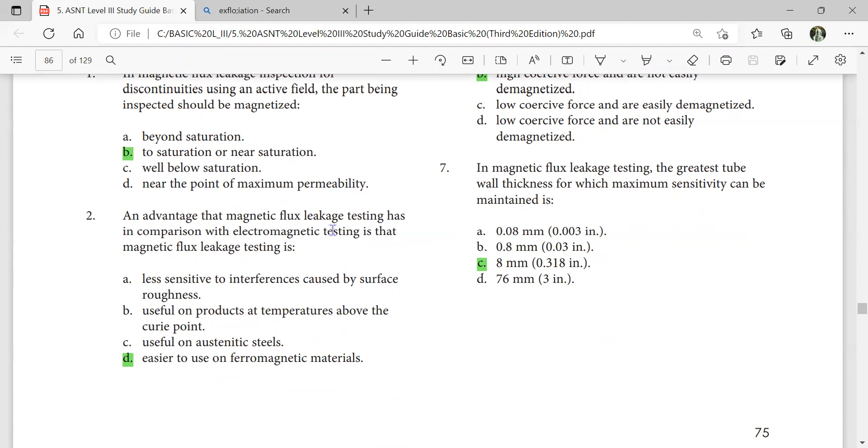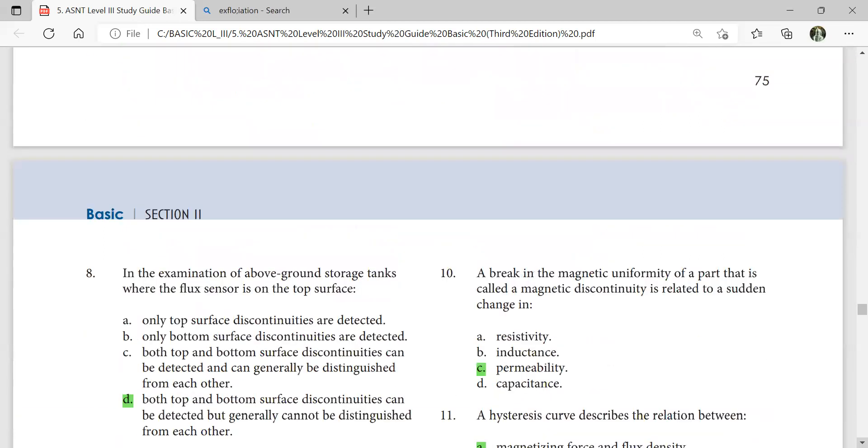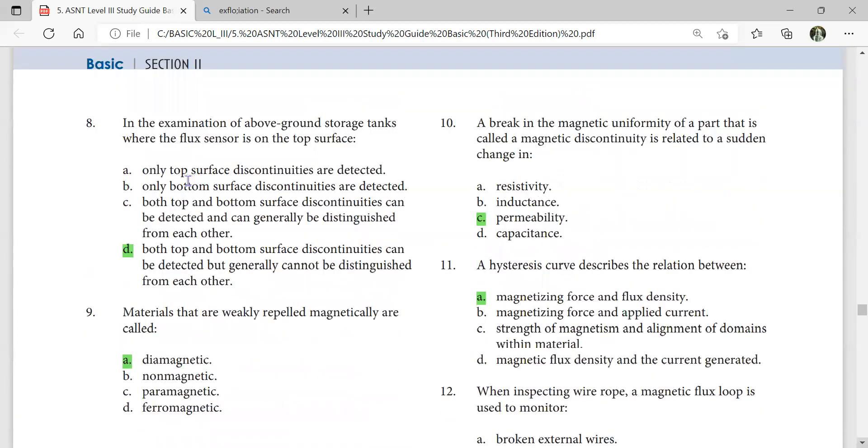The advantage of magnetic flux leakage testing in comparison with electromagnetic testing is that magnetic flux leakage testing is easier to use on ferromagnetic materials. This is for ferromagnetic materials, not for any other materials.